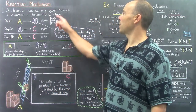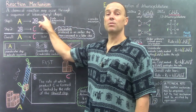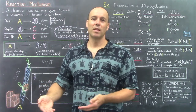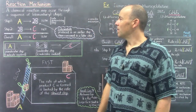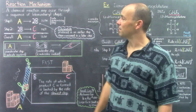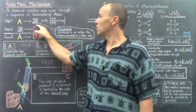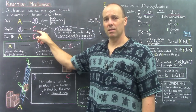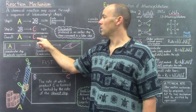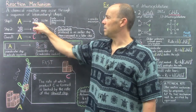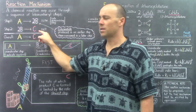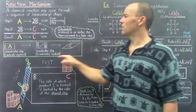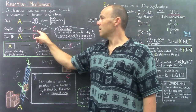A reaction mechanism is when a chemical reaction occurs through a sequence of elementary steps. Each of those individual reactions is called an elementary reaction, or a simple reaction. Here's an example of a generic two-step mechanism: in the first step, a reactant molecule A forms two molecules B, and these react in the second step to form the final product C. The overall effect is for molecule A to form product C. These molecules B that appear in the first step then react again in the second one are called intermediates — produced in an earlier step, then consumed in a later step, so they pop up along the way.